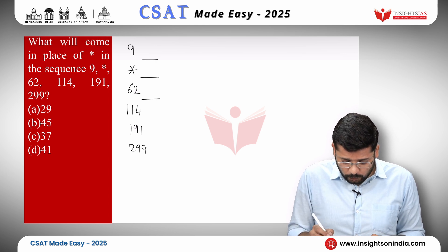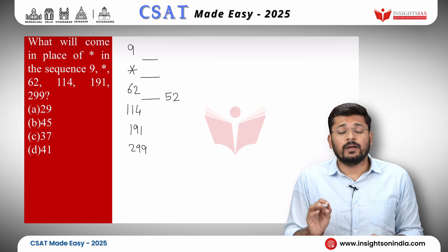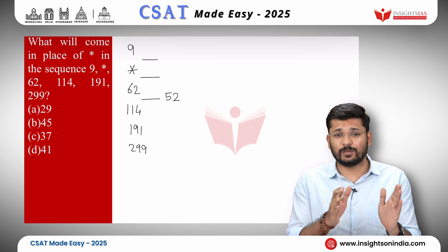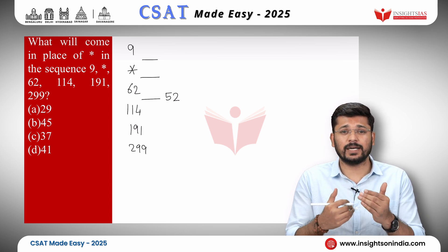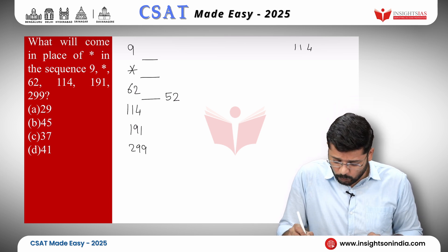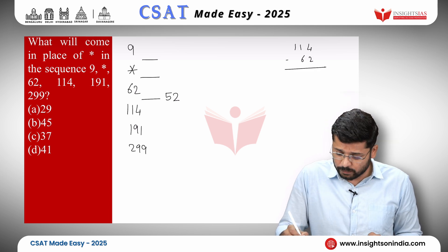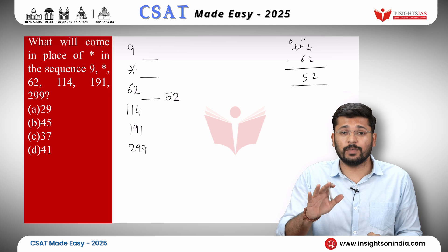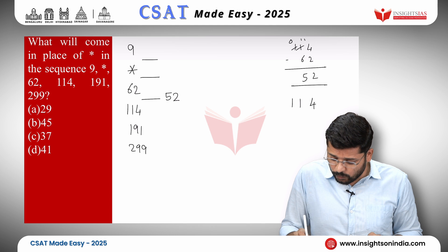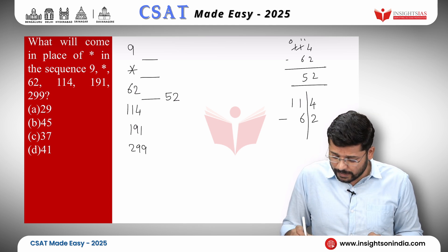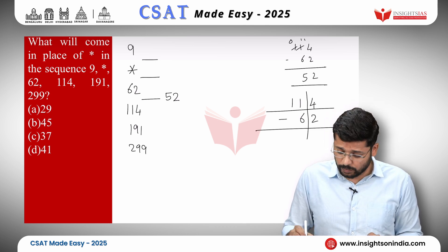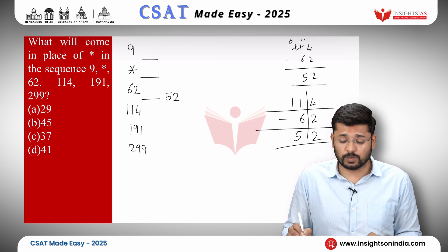114 minus 62 equals 52. Let me show a quick subtraction shortcut: instead of subtracting unit-by-unit as taught in school, divide the number into units place and the rest. For 114 minus 62: take 11 minus 6 equals 5, and 4 minus 2 equals 2, giving 52. This works when the units digit of the minuend is bigger than that of the subtrahend.